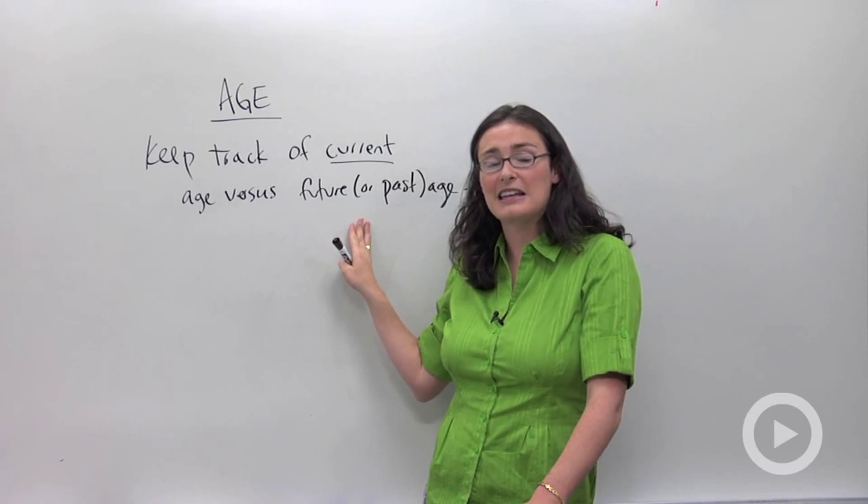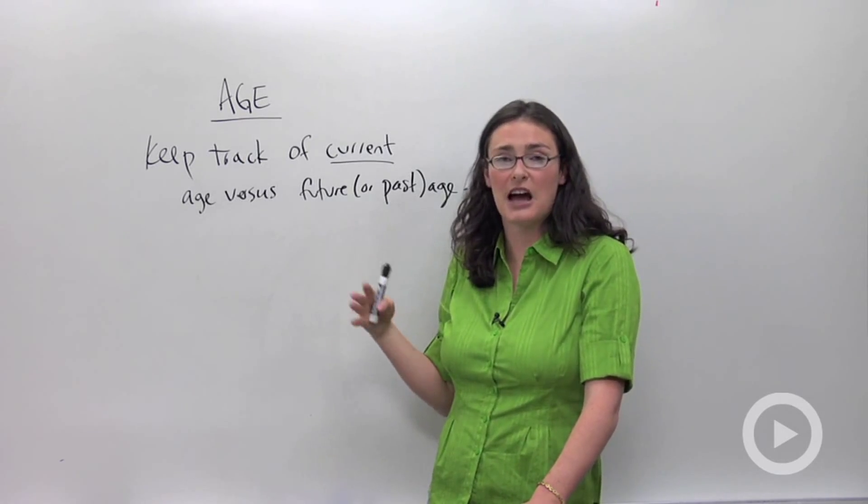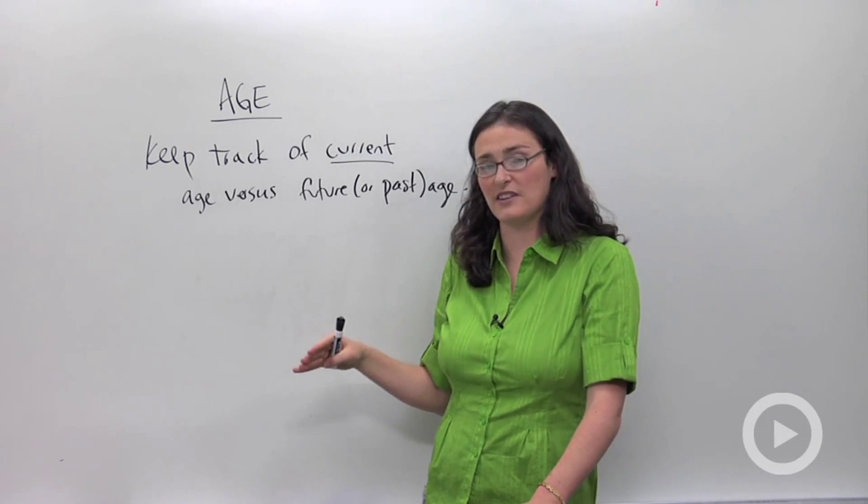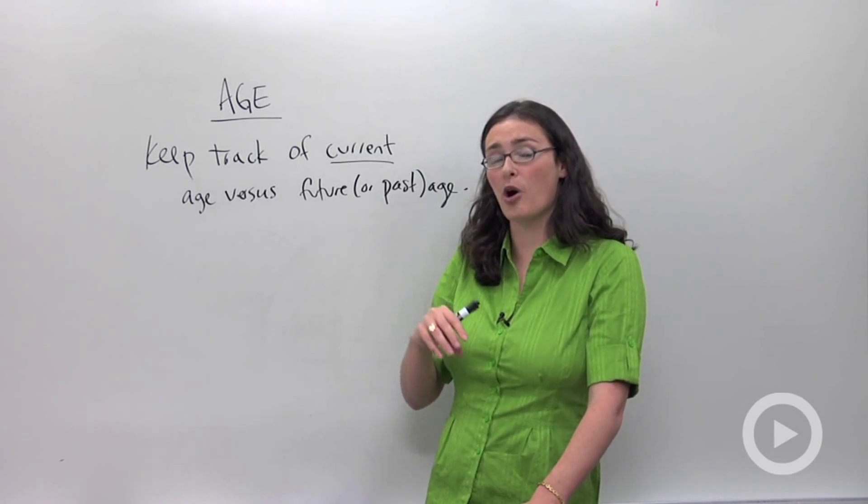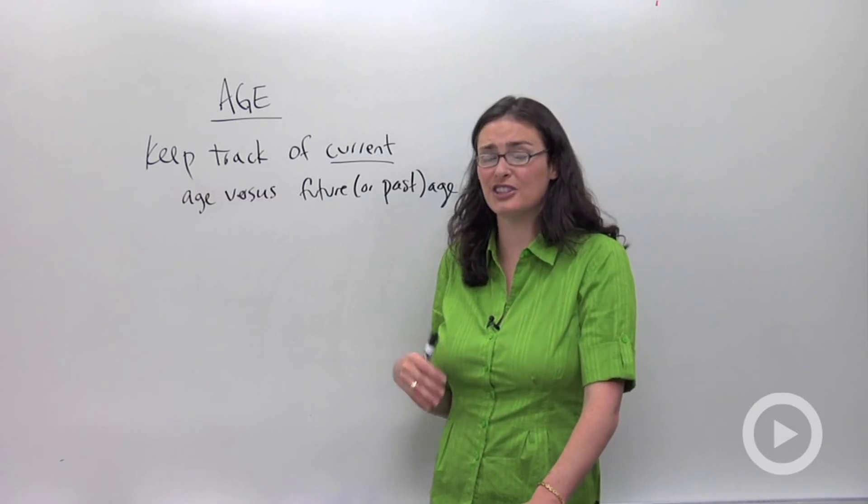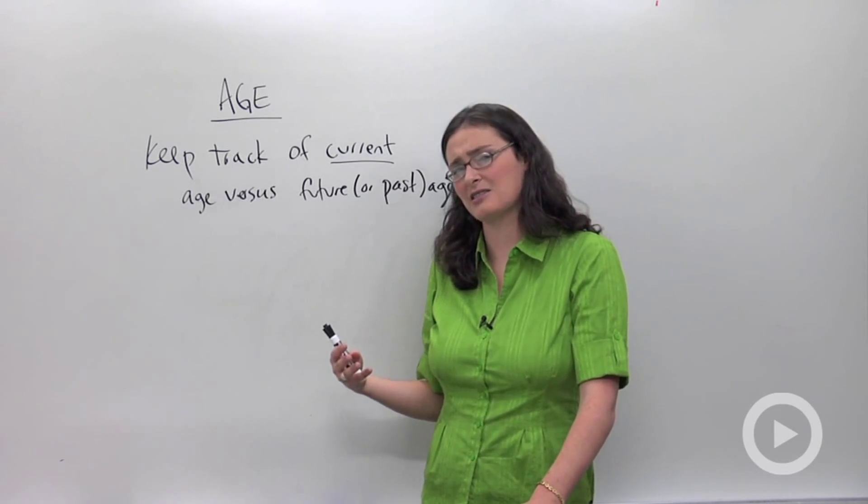Another thing to keep in mind is that if you're adding time, like if time's going by between one equation and the next, make sure you're adding that time to the age of both people. If you only add to one person, you're going to end up with the wrong equations and the wrong answers.